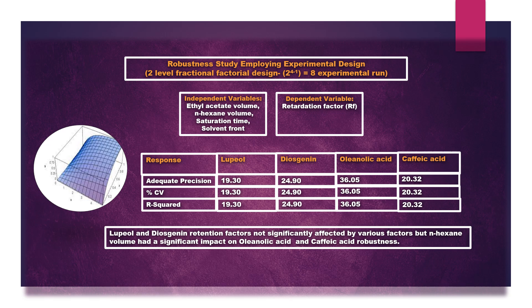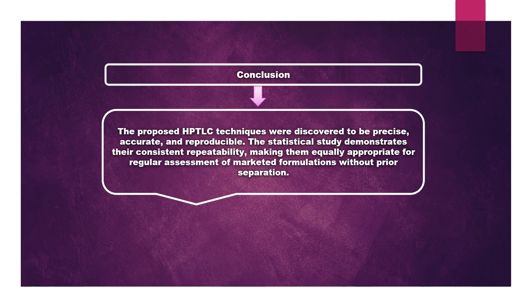It was observed that the lupeol and diosgenin retardation factors were not significantly affected by variation in factors, but hexane volume had a significant impact on the oleanolic acid and caffeic acid robustness. In conclusion, the proposed HPTLC technique was discovered to be precise, accurate, and reproducible.